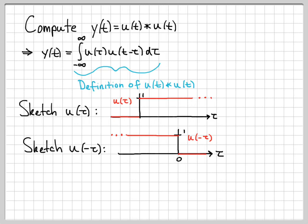On the tau axis I've labeled time 0. When we sketch u of t minus tau, keeping track of where 0 gets shifted to due to the shift t is the key to working these problems. u of t minus tau is the other part we need for the convolution integrand, since we need to take the product u of tau times u of t minus tau. So what does u of t minus tau look like? It is basically u of minus tau, the signal we just sketched, but shifted by some amount t.